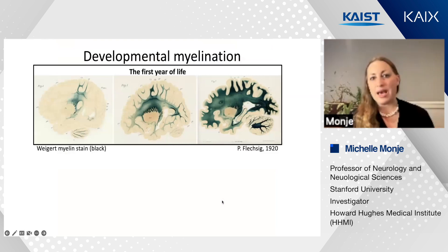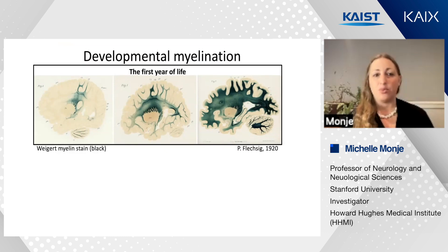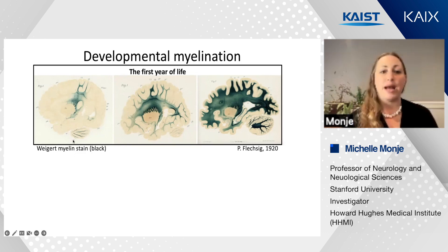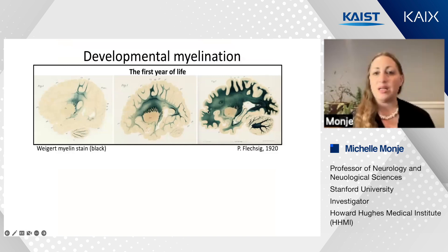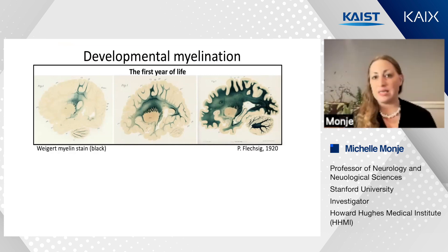Humans are a semi-altricial species. We are born with almost no myelination. Myelin begins just before the time of birth and then progresses in a massive wave over the first year, beginning around the central sulcus at the time of birth and then progressing towards the poles of the brain, beginning in the cervical spinal cord and progressing down towards the lumbosacral spinal cord.